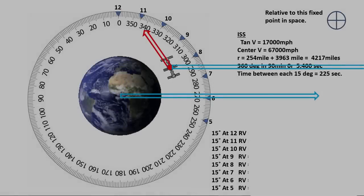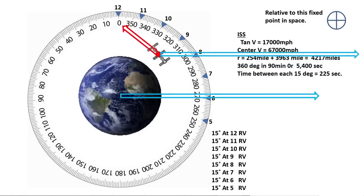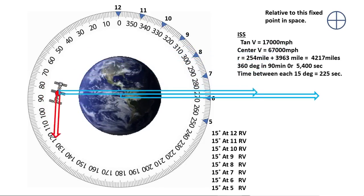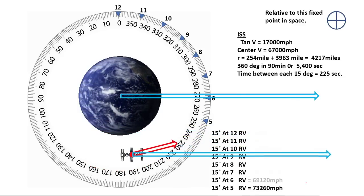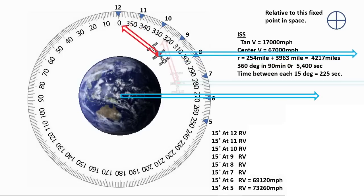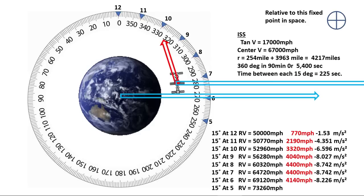The International Space Station orbits Earth at 17,000 miles per hour, completes one orbit in approximately 90 minutes. Its distance is 4,217 miles from the center of rotation. From 0.5 to 0.6, 15 degrees of rotation, it takes 225 seconds. The resultant velocity of the ISS changes by 4140 miles per hour in that time. The acceleration of the ISS would be minus 8.226 meters per second squared.